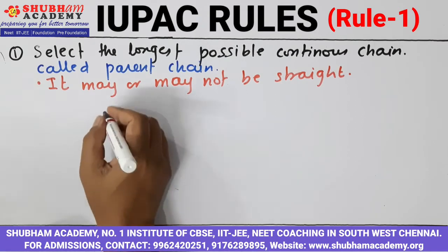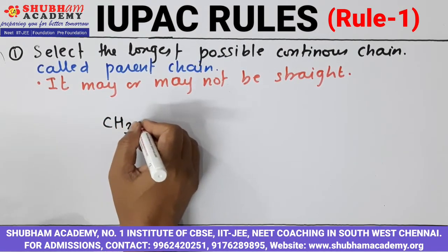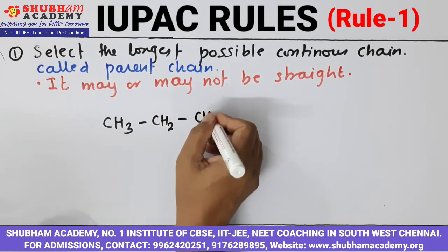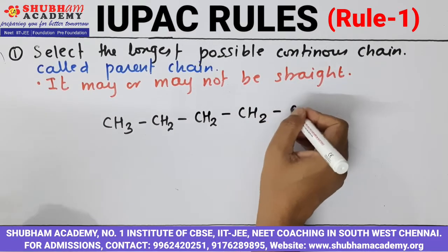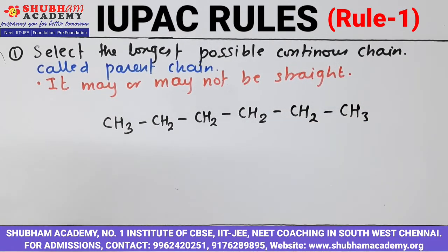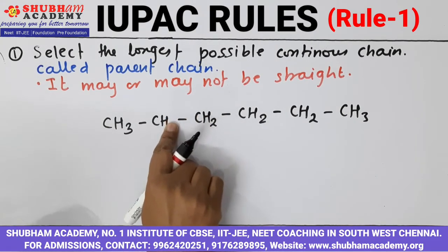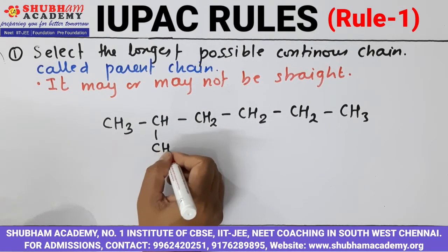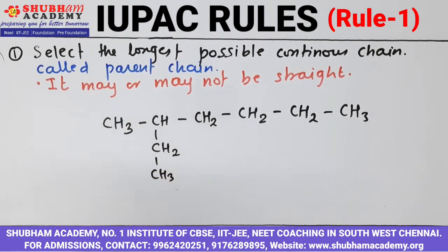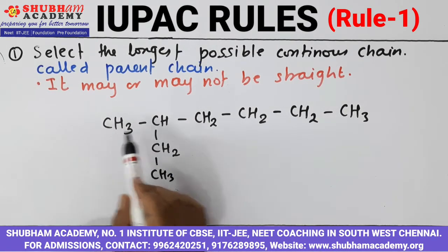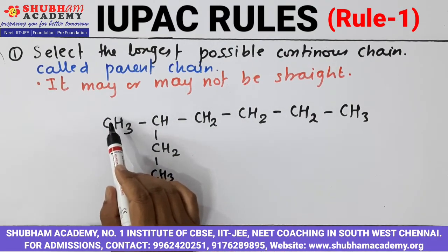Suppose the compound given to you is CH3-CH2-CH2-CH2-CH2-CH3. As there is no branching in the chain, suppose here you have done some branching — CH2-CH3, one branching is there. Now while selecting the longest chain, you have to see whether to go straight or to come down. If you are going straight then you count 1, 2, 3, 4, 5, 6 — that gives 6 carbon atoms.